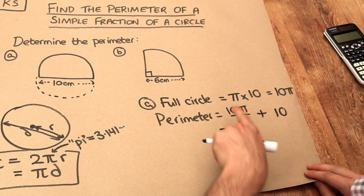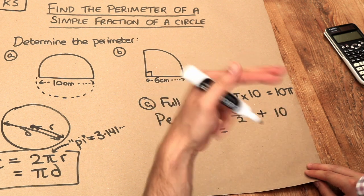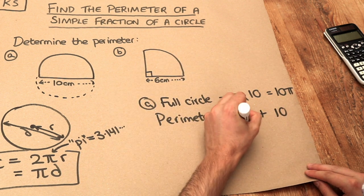Now if we just try to simplify this a bit, if we've got 10 lots of pi and we divide it by 2, then we have 5 lots of pi. So we've got 5 pi plus 10.